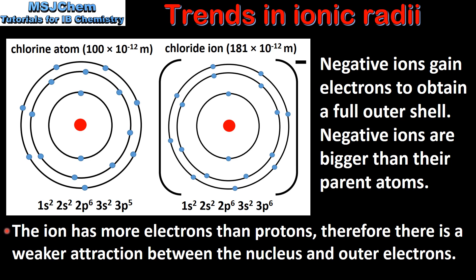So negative ions are bigger than their parent atoms. The reason for this trend is that the ion has more electrons than protons, therefore there is a weaker attraction between the nucleus and the outer electrons.